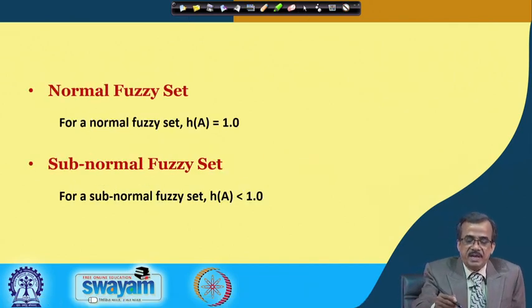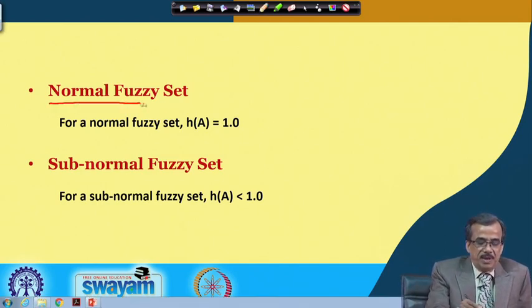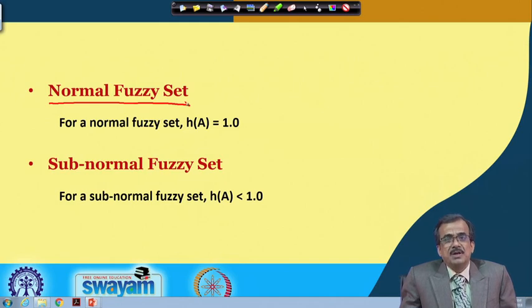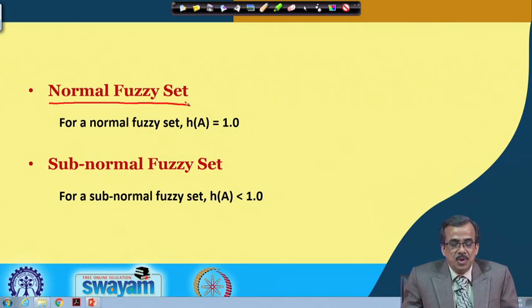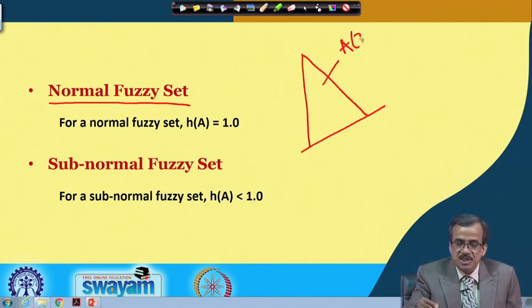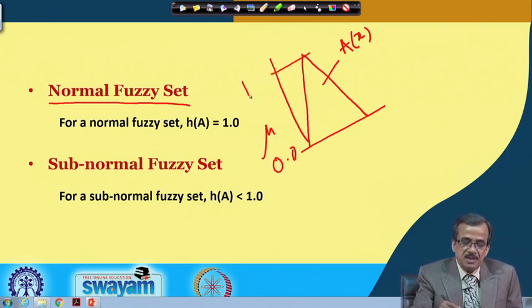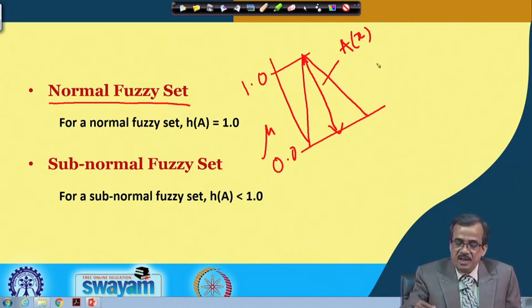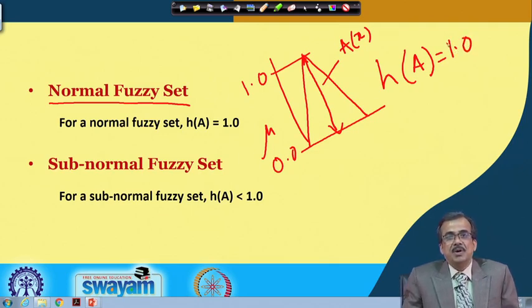Now I am going to define another term called the normal fuzzy set. A fuzzy set is called normal if its height is found to be equal to 1.0. Let me draw one membership function distribution — this is a fuzzy set A(x), with mu ranging from 0.0 to 1.0. The height of this particular fuzzy set is 1.0, and this is a normal fuzzy set.